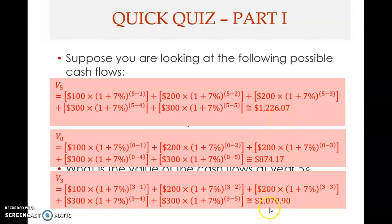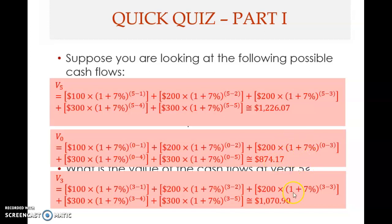If you want the value for year three, there are two ways. You can take the year five value and discount over two years: 1226.07 divided by one plus seven percent raised to the power of two, since you want to bring it from year five to year three. Alternatively, you can take the year zero value and compound over three years: 874.17 multiplied by one plus seven percent raised to the power of three gives 1070.90.